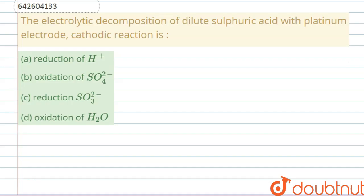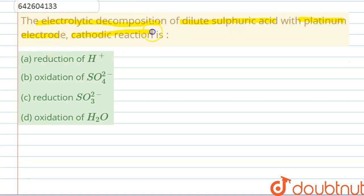Hello everyone, let's start this question. In the electrolytic decomposition of dilute sulfuric acid with platinum electrodes, we have to identify the cathodic reaction.